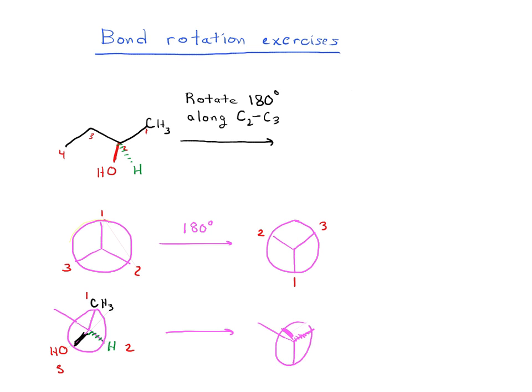And so just like we did on this top example where 1 became from straight up to straight down, 1 is going to become from straight up to straight down, 2 is going to be the one that's pointing out towards us, and 3 is going to be the dash that's pointing away from us.